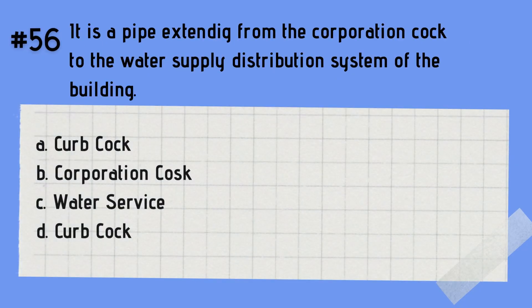Question 56: It is a pipe extending from the corporation caulk to the water supply distribution system of the building. A. Curb caulk. B. Corporation caulk. C. Water service. D. Curb caulk. The answer is C — water service. A water service is a pipe extending from the corporation caulk to the water supply distribution system of the building.